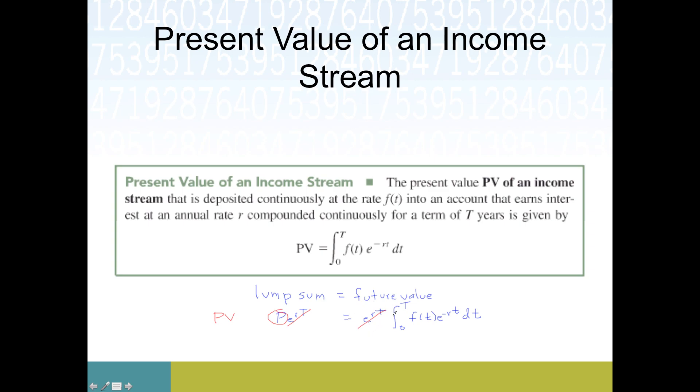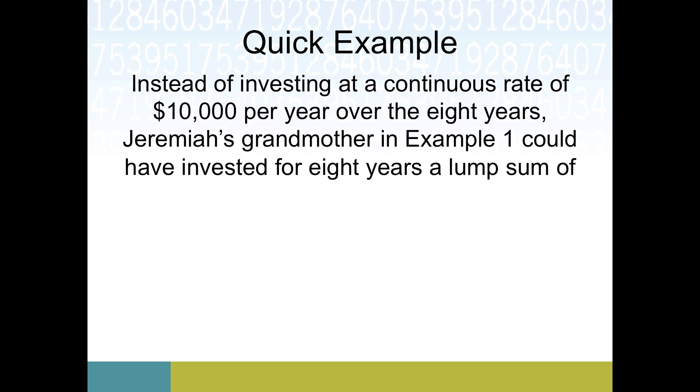We'll do a quick one just for comparison. If instead of investing at a continuous rate, we're looking back at this previous example. Instead of putting in ten thousand dollars a year for eight years, this kid's grandma could have said okay, well how much money would I need to put into an account right now and have it be the same value as if I had invested at ten thousand dollars per year for eight years? This exact value is what we would call present value - how much money you'd have to put in an account right now to match the value of an annuity over the same period of time at the same interest rate. Present value looks like this. Here's our capital T, and it's the same integral that we did for the future value too.